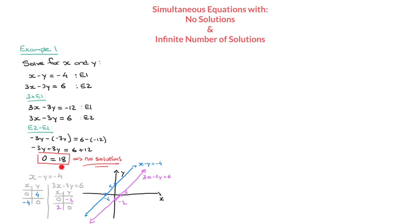When we reach a result like 0 equals 18 — or 0 equals negative 3, or 0 equals 20 — when we reach a mathematical contradiction like this, it means the simultaneous equations have no solutions. In turn, it means that the corresponding lines are parallel.